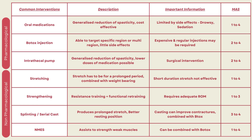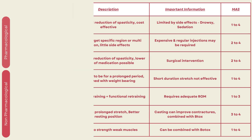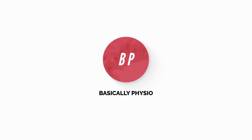Here's a summary of all the interventions explained today. I've also included the MAS — the Modified Ashworth Scale score — indicating which of these interventions will be useful for each level. Thank you for watching till the end. Do subscribe and like the video if you found it useful.